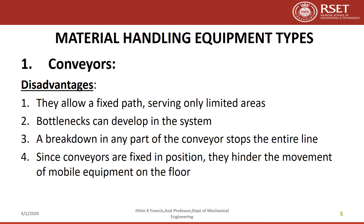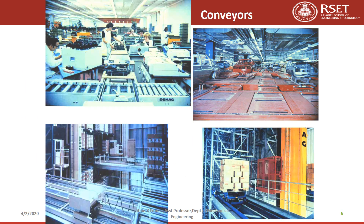Now let us see the disadvantages. They allow a fixed path serving limited areas. Bottlenecks can be developed in the system. A breakdown in any part of the conveyor stops the entire line. Since the conveyors are in a fixed position, they hinder the movement of mobile equipment on the floor.